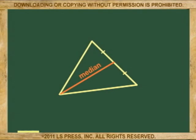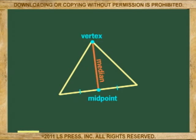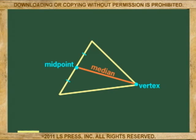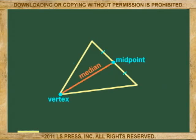The median is defined as the segment that joins any vertex with the midpoint of the side opposite the vertex. Because a triangle has three vertices, it has three medians.